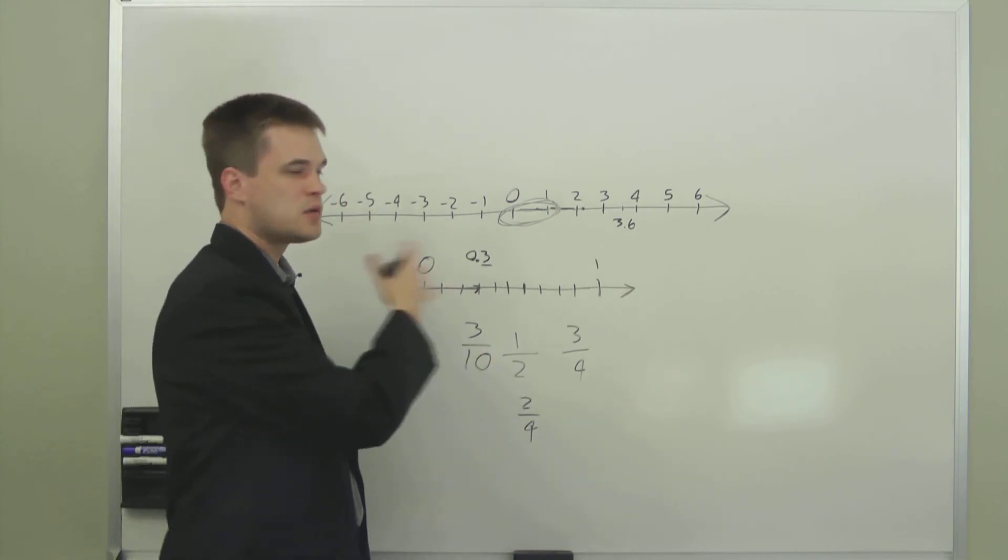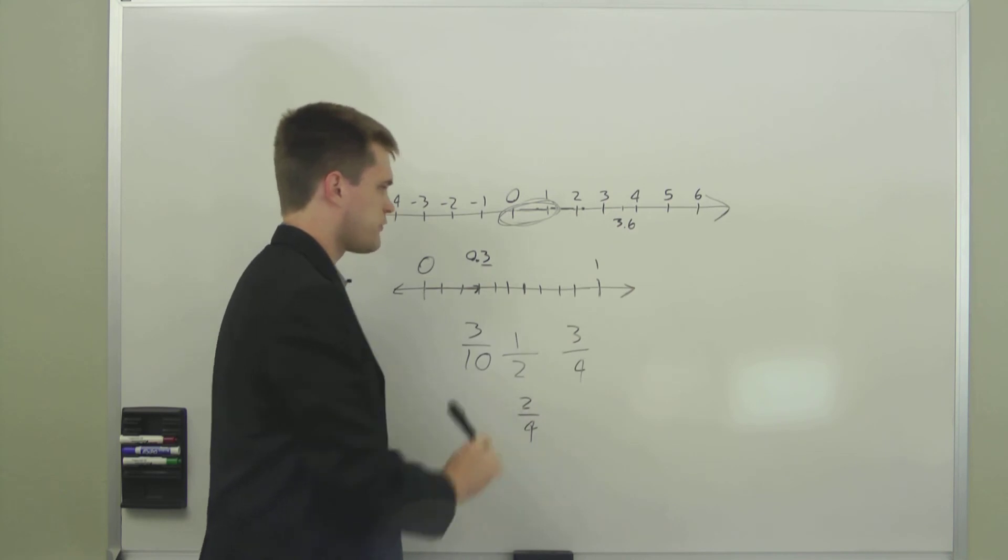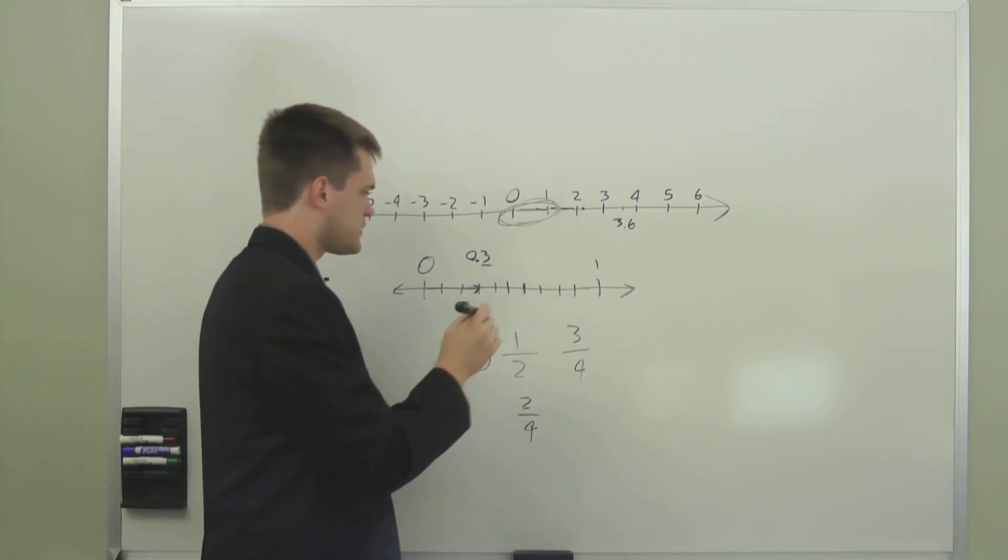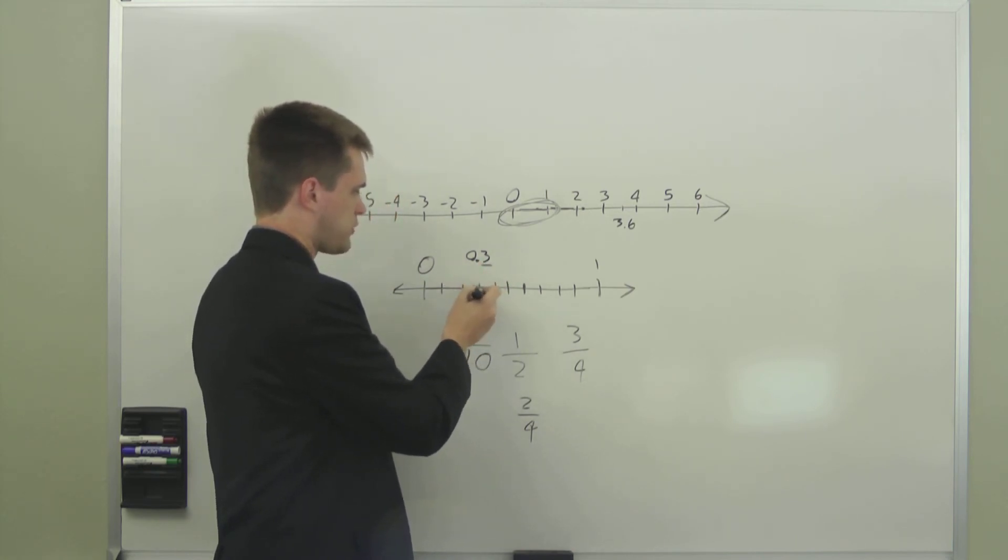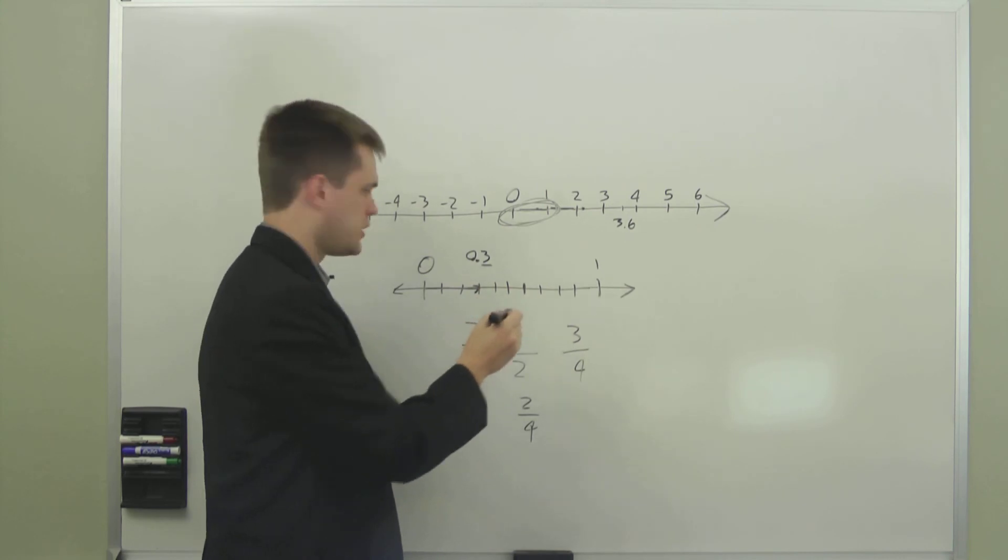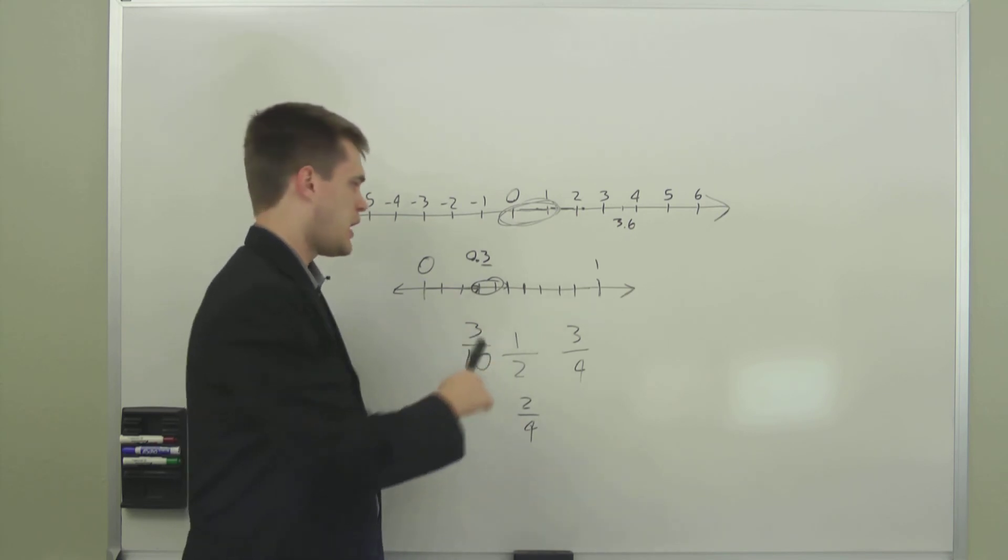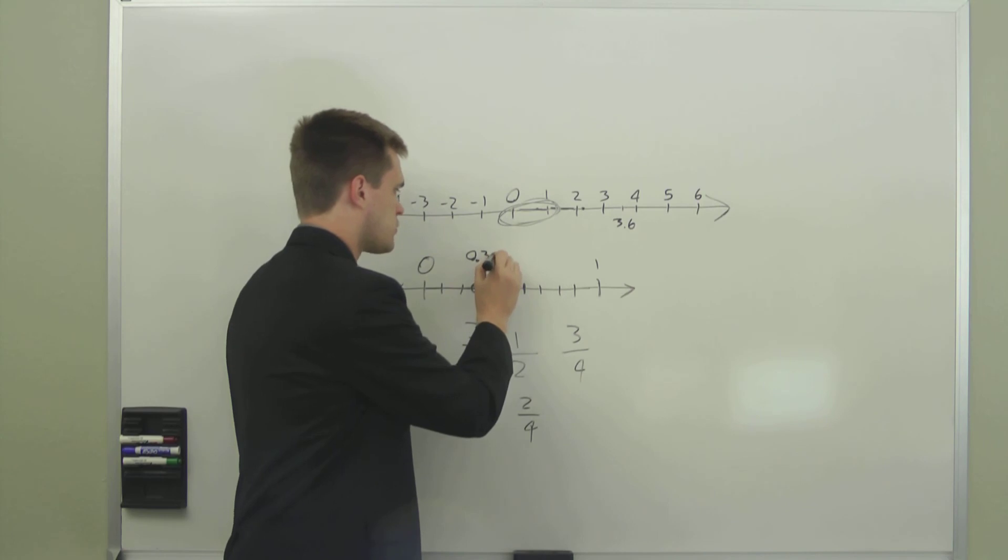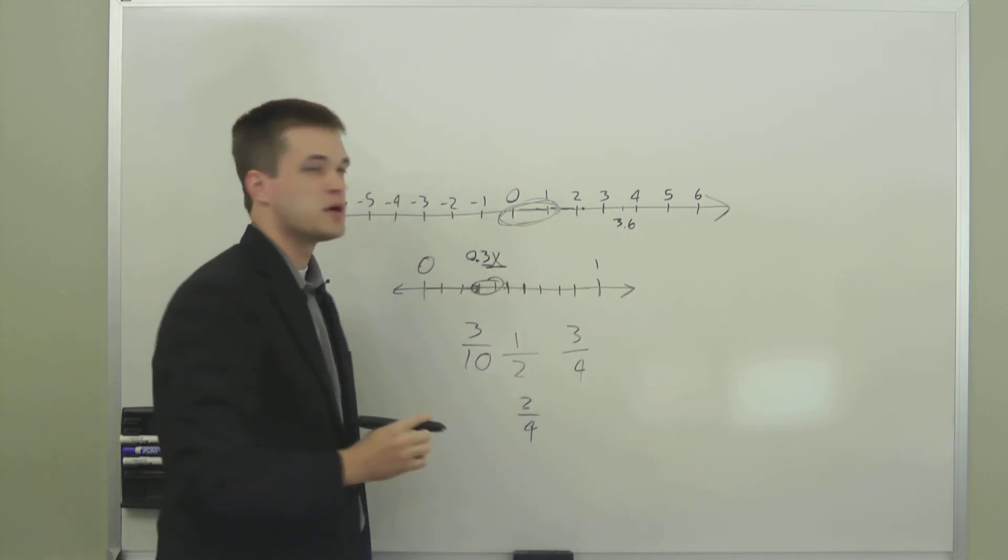And so you can describe any number on the number line using decimals or fractions. If you want to get even more specific than tenths, you can divide up, for instance, if you wanted to go somewhere between 0.3 and 0.4, you could divide this space up here into ten equal parts. And then however many of those parts you went forward from 0.3, you would write that as another decimal here.